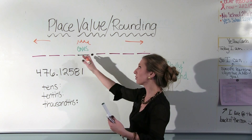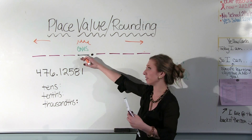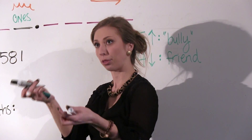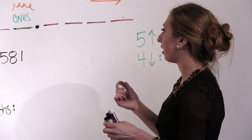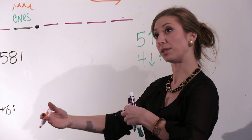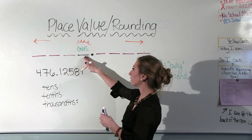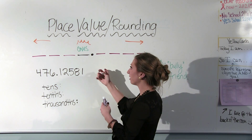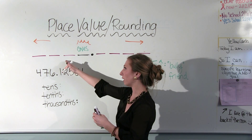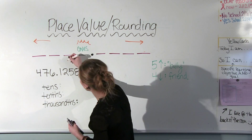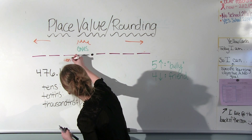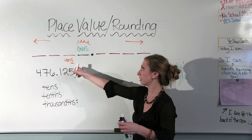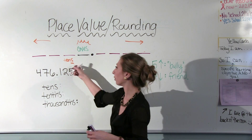Place value, when we're talking about a number, is talking about the position that that number is in and what value it holds. Most people are very familiar with the ones, tens place, hundreds place, and so on. The more to the left that we go on the place value, the greater the value of that number, and the further to the right we go, the smaller the value of that place value or that number.